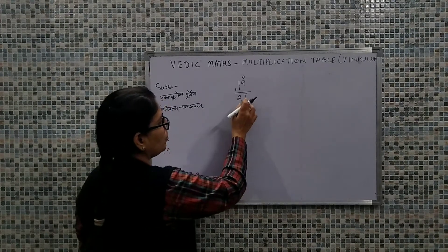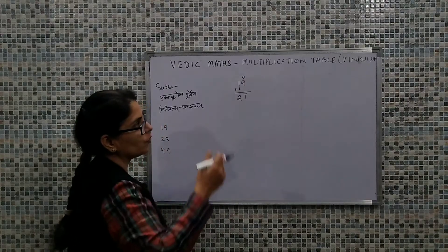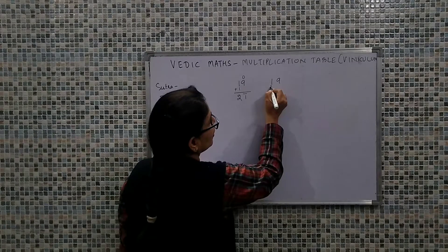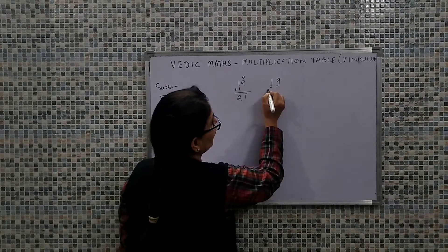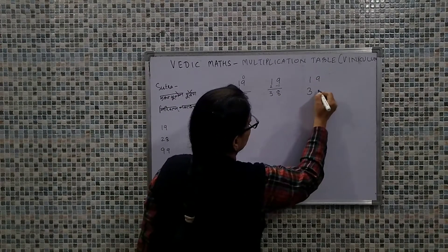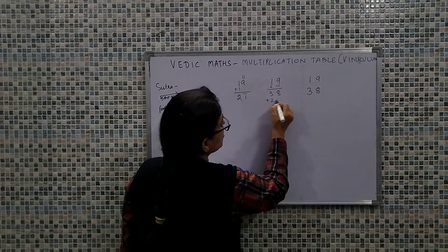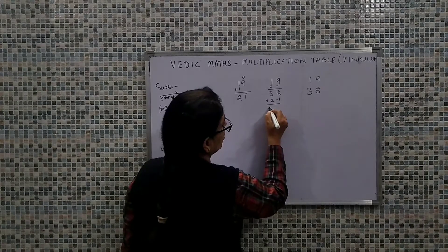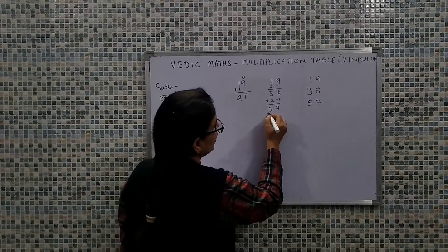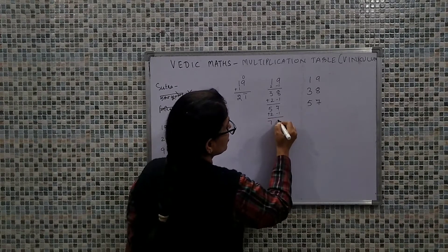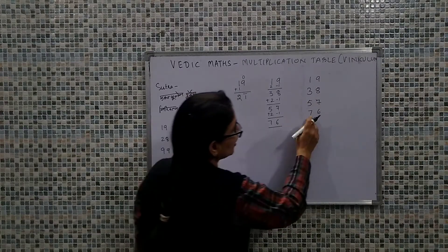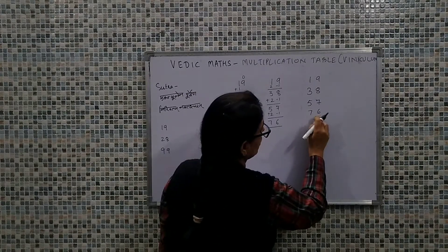Now we have formed the viniculum number, so taking this number as reference we will go with the formation of the table. First we write 19. Now in this we'll add 2 and subtract 1. So what I'll get is 38. So I'll write first 19, then came 38. In this we did plus 2 and minus 1. So 57 I write the third value as 57. Here plus 2, here minus 1, that's 76.